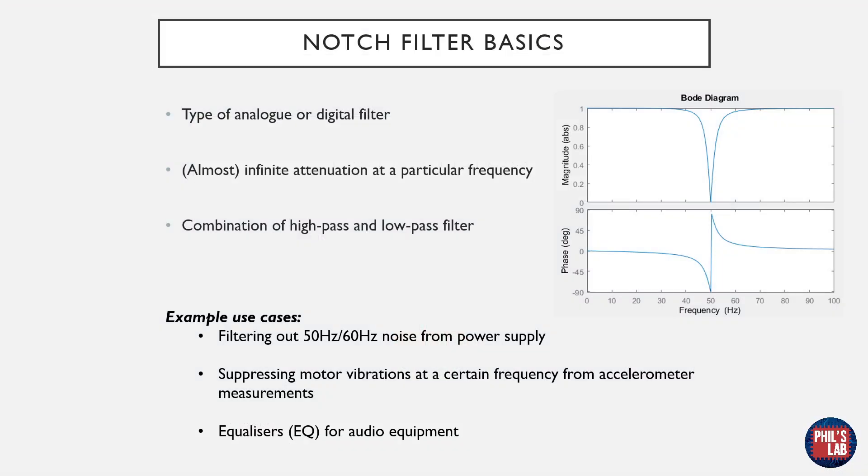Here's some notch filter basics. Essentially it's a type of analog or digital filter with a frequency response as shown over here. So we have flat passband over here and over here and at some center frequency we have essentially infinite attenuation at that single frequency and strong attenuation on the side bands over here. And this is really useful if we want to for example cut out a certain frequency so for example we might have to filter out 50 or 60 hertz power supply noise.